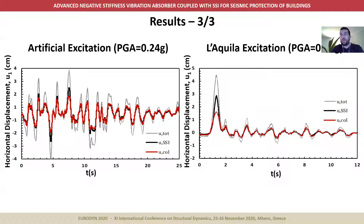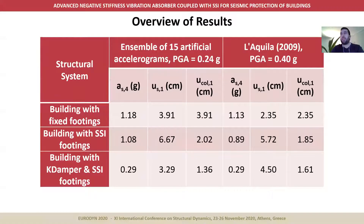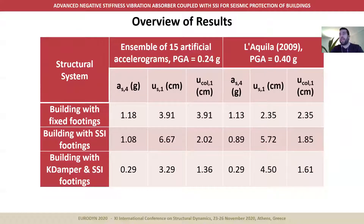Although the displacement of the first story for the case of an artificial accelerogram reached around four centimeters, it was distributed both in the column in the form of flexural deformation and in the footing in the form of predominantly rotational and also translational displacement due to the SSI effects. The maximum flexural deformation was a mere 1.8 centimeters, which is almost three times lower than the flexural deformation demanded in the case of the building with no seismic protection. The same pattern can be observed for the L'Aquila excitation. In absolute numbers, for both events, we have a dramatic reduction of accelerations, and for the flexural deformations, we have a dramatic reduction due to the SSI effects — again, rotation and displacement of the footing.